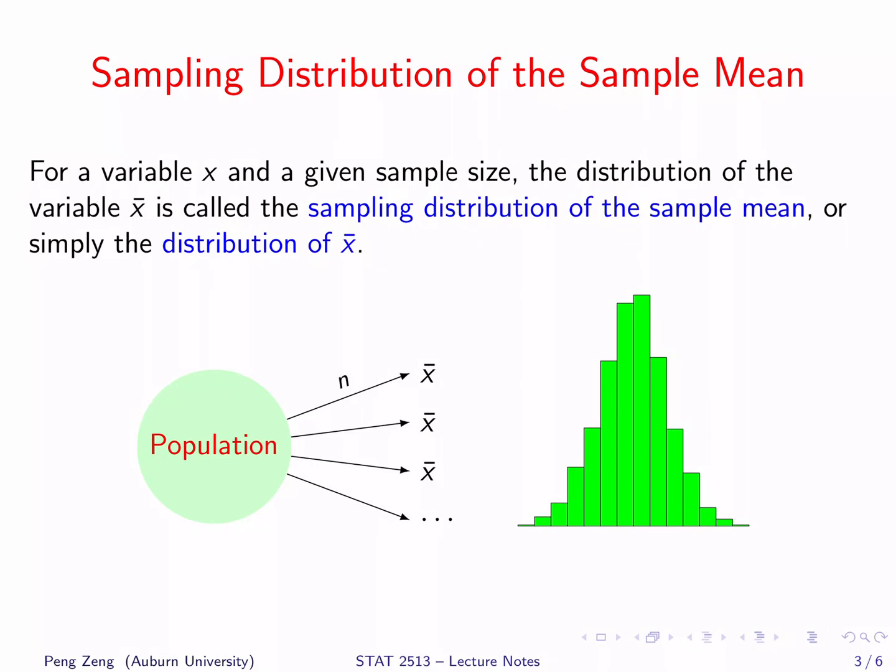For variable x and a given sample size, the distribution of the variable x̄ is called the sampling distribution of the sample mean. Sometimes, we may simply call it the distribution of x̄.